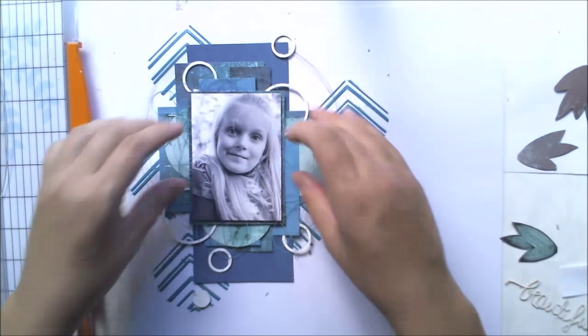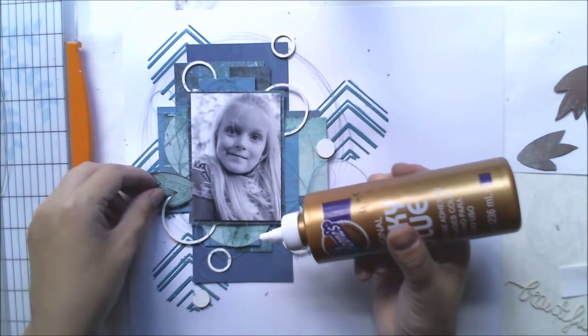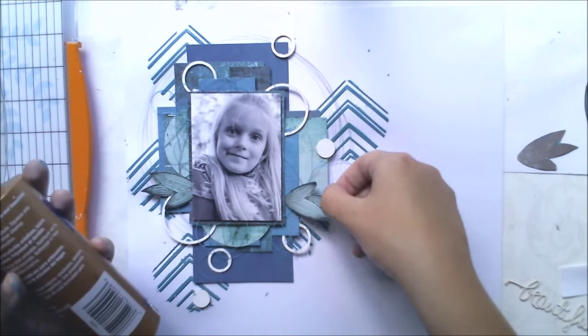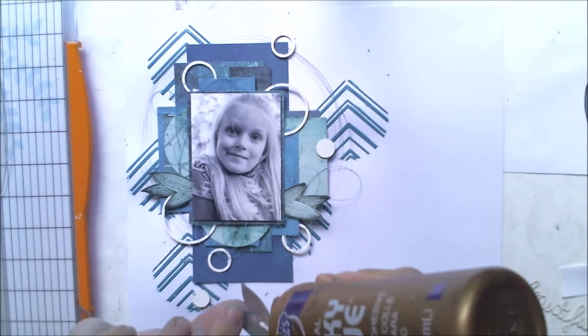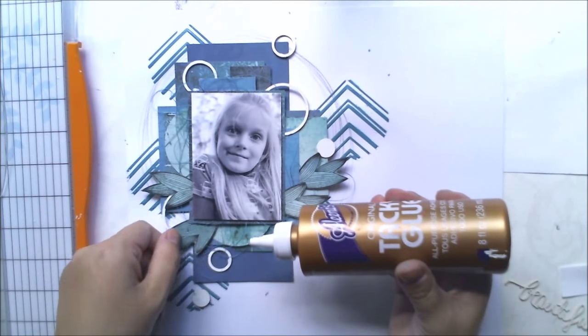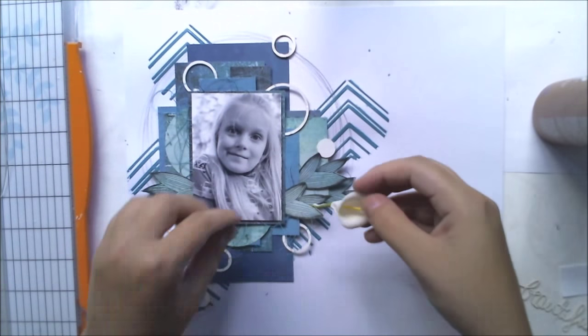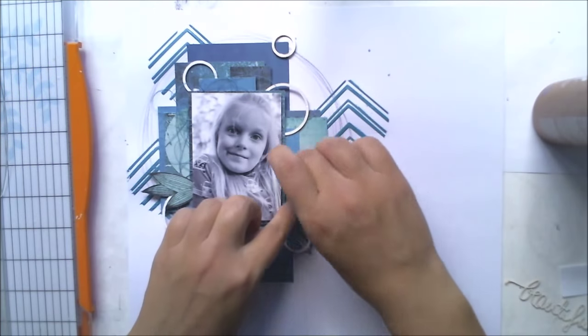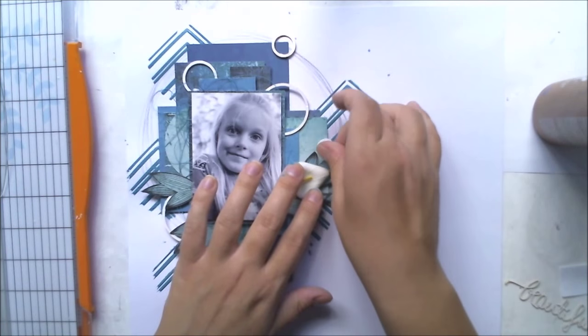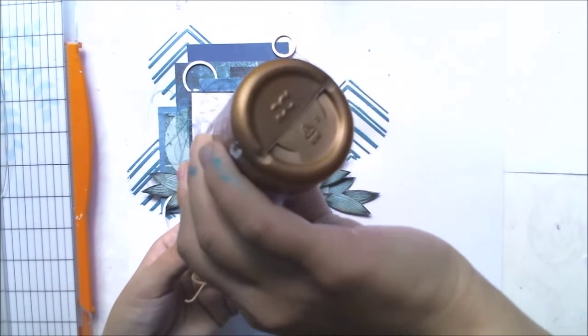I used some 3D foams together with glue to adhere the picture, and now only glue to add these leaves and embellishments onto this layout. Now these leaves look actually like leaves, and as I cut them off they give a lot of dimension, and together with that flower it looks nice.